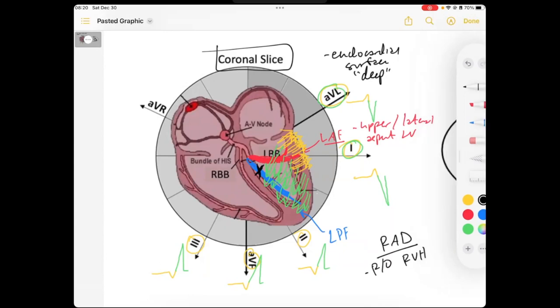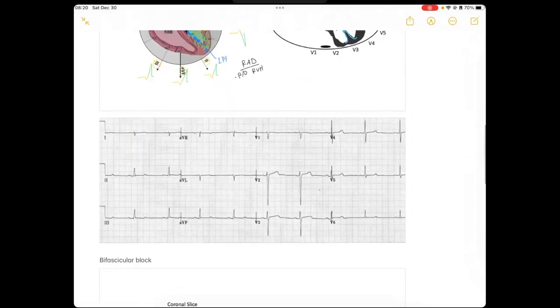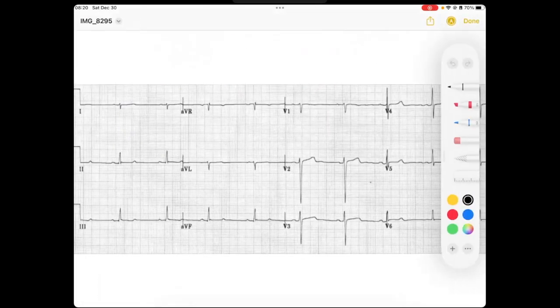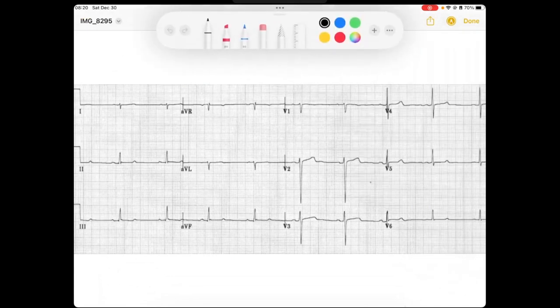All right. Let's take a look at an example. So here we've got a normal EKG. We look through. We see regular rhythm. We get P's for our QRSs. They're upright in 1, upright in AVF. So it's probably a sinus P wave. Got a normal PR interval.